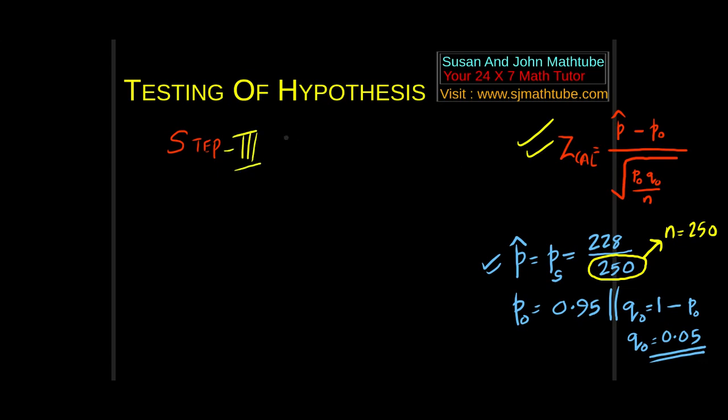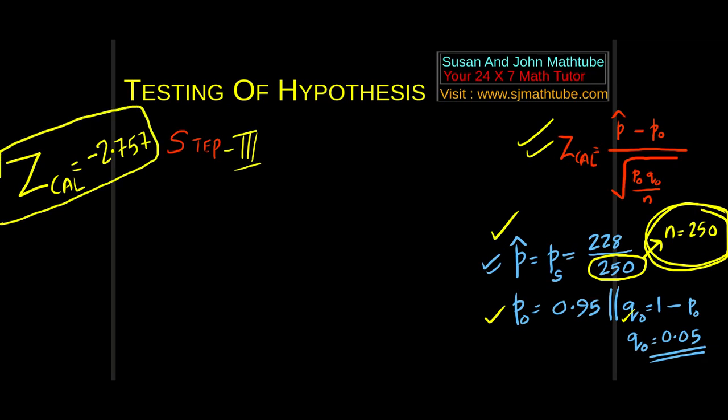P0 means the right hand side of H0, and Q0 is the usual notation in proportion, that is 1 minus P0. So Q0 is 0.05. Finally, our N. The sample proportion, so N is equal to 250. Use the formula, we will complete step number 3. Z calculated is equal to, substitute, we have P cap, P0, Q0 and N. I got the answer minus 2.757. Put it in a box because you will be searching for this value a little bit later.